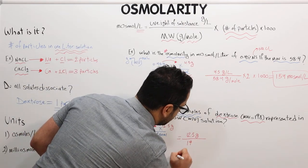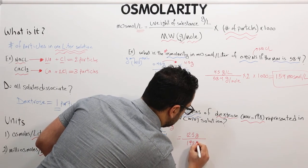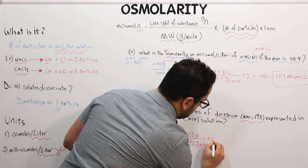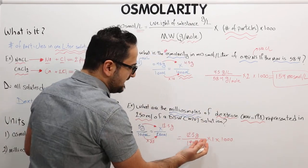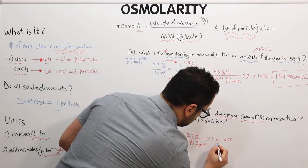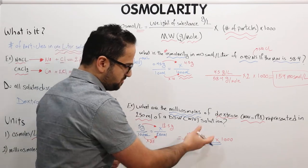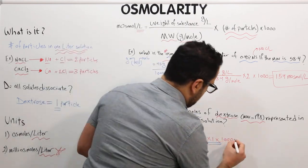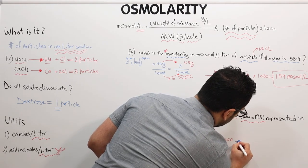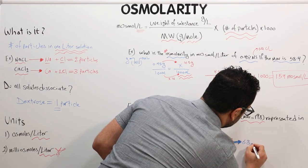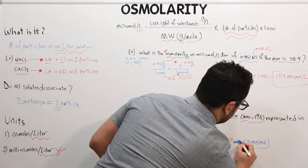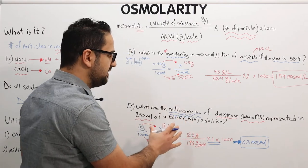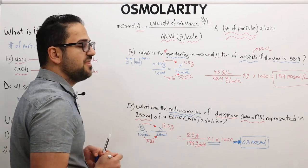So following the equation: 12.5 grams divided by 198 grams per mole, times 1 particle, times 1000. Plugging this into the calculator gives an answer of 63 milliosmoles. Notice it is milliosmoles — no 'per liter.' This is the key difference between the two questions: osmolarity is normalized to 1 liter, while milliosmoles are normalized to the volume of solution given in the question or prescription.